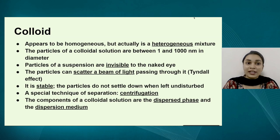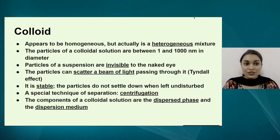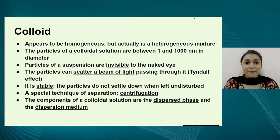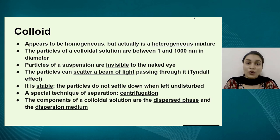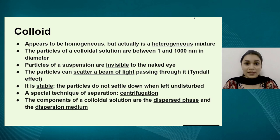The last type of mixture is a colloid. A colloid is a mixture which has properties intermediate between a true solution and a suspension. It appears homogeneous in a beaker or glass, but is actually a heterogeneous mixture. The particle size is between 1 to 1000 nanometers — the particles are invisible to the naked eye but they are able to scatter a beam of light, meaning colloidal particles do show the Tyndall effect. The components of colloids are stable, so the components do not separate out on their own and we need special methods to separate them.